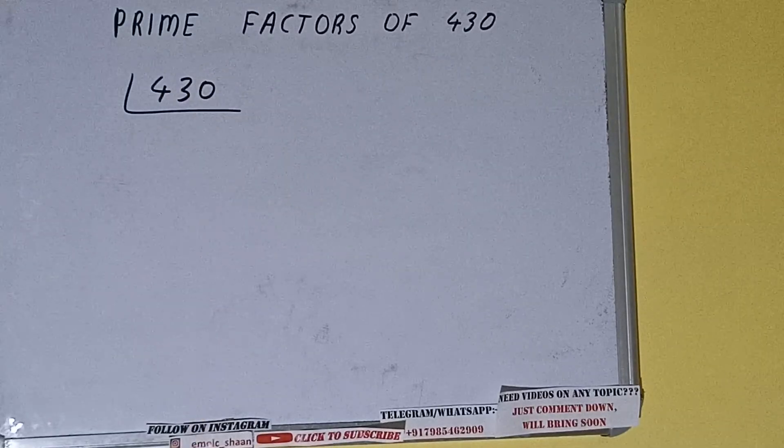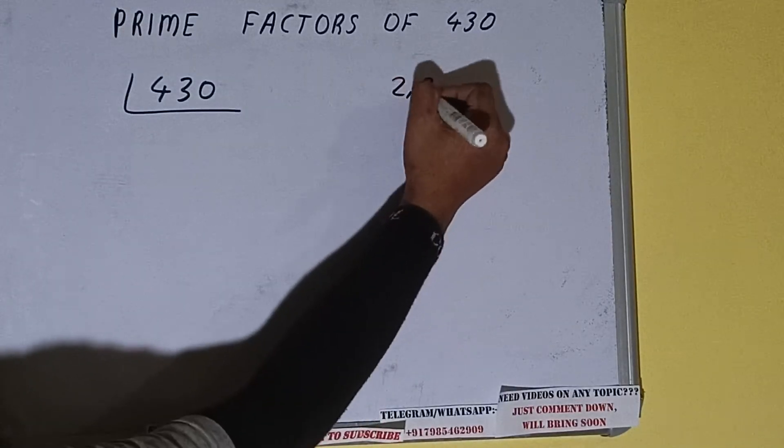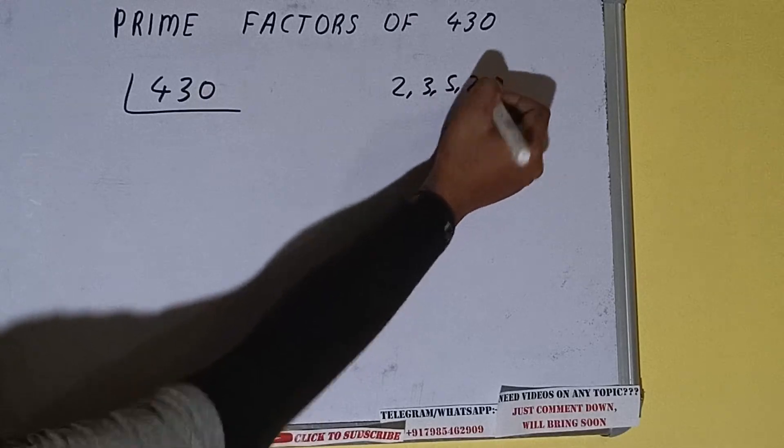The next thing we need to know about is what are prime numbers. So prime numbers are numbers that are divisible by 1 and the number itself, like 2, 3, 5, 7, and so on.